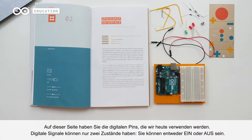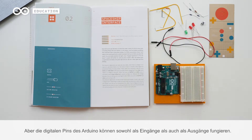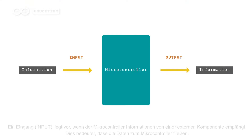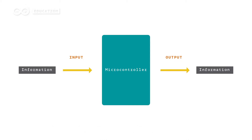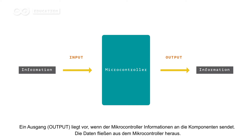Digital signals can have only two states — they can be either on or off. The Arduino's digital pins can act as both inputs and outputs. An input is when the microcontroller receives information from an external component, meaning data flows towards the microcontroller. An output is when the microcontroller sends information to the components, so data flows out from the microcontroller.